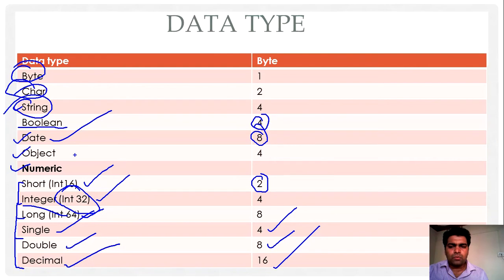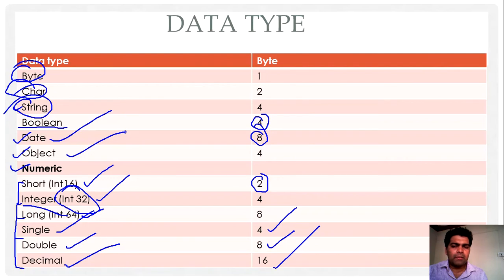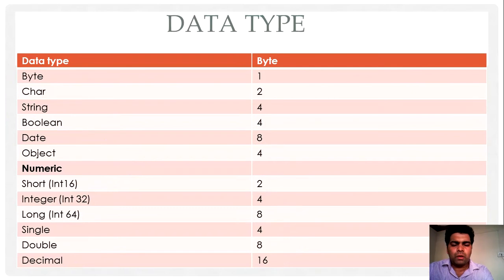The superclass of every other data type is object. In .NET, every data type is a class, and object is the superclass of each and every data type. When we categorize these data types in our programming language, they basically belong to two categories: value type and reference type.